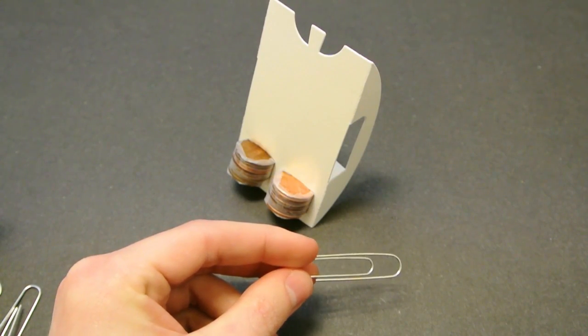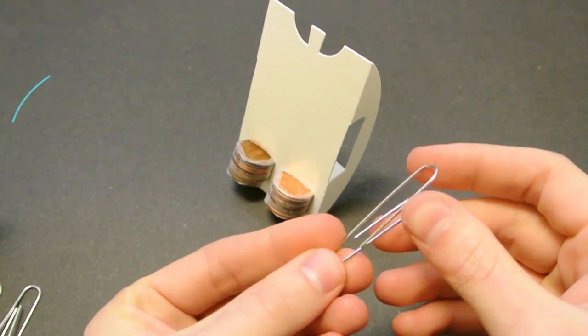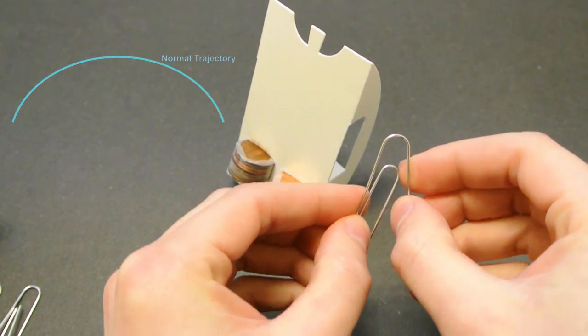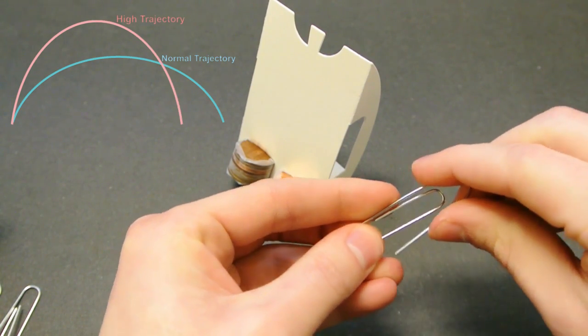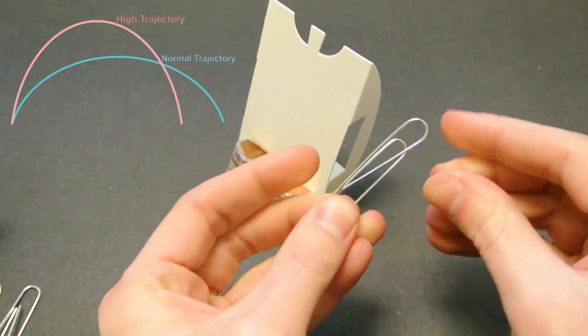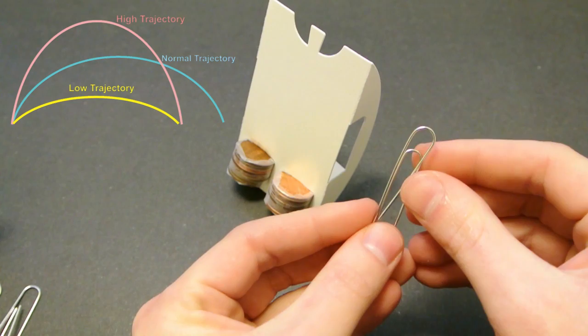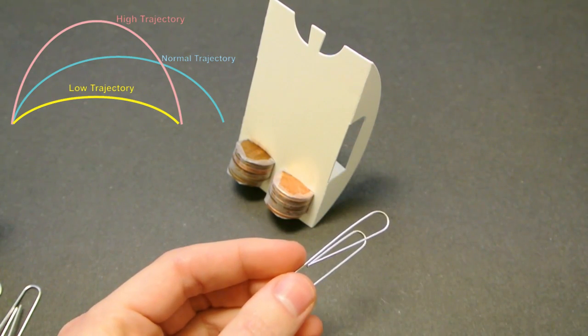One way you can adjust the flight path of the paper clips is by bending. You can bend the top loop so that it is larger, which will give a higher trajectory, or you can bend it inward to give it a lower trajectory.